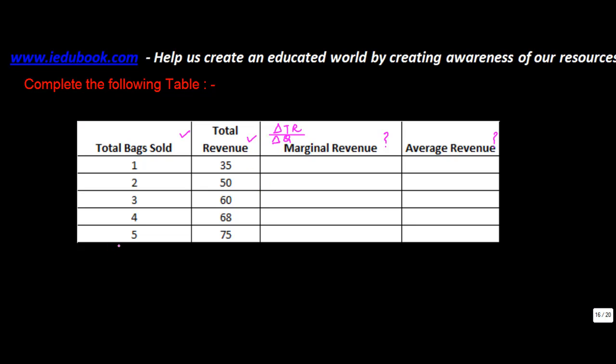So in the first case, C1, change in total revenue. So the total revenue is 35 and before this it was 0. So change is going to be 35 minus 0 divided by change in quantity. So quantity increased from 0 to 1. So 1 minus 0. 35 upon 1 is equal to 35. So your marginal revenue becomes 35 in the first case.